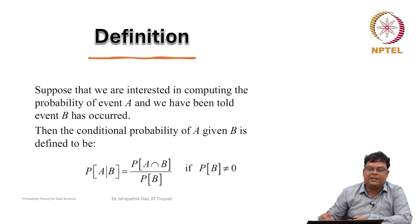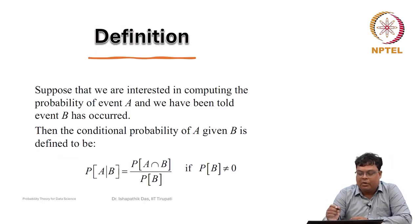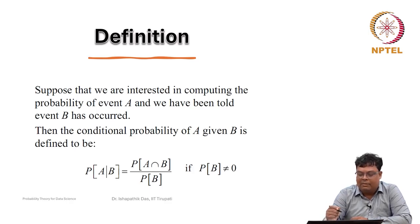Now here is the definition. We will formally define the conditional probability. Suppose that we are interested in computing the probability of an event A and we have been told that event B has occurred.